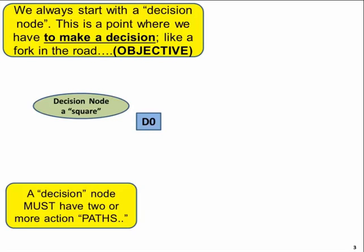Now if you have to make a decision, you must at least have two possible options or what we call paths. In this case, we have the cruise, the road trip, or stay at home.